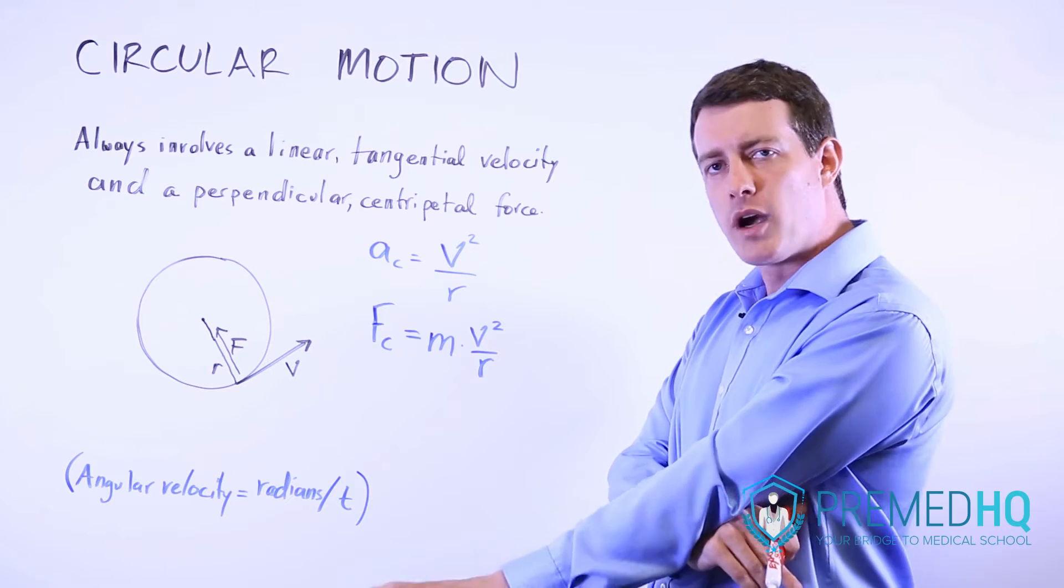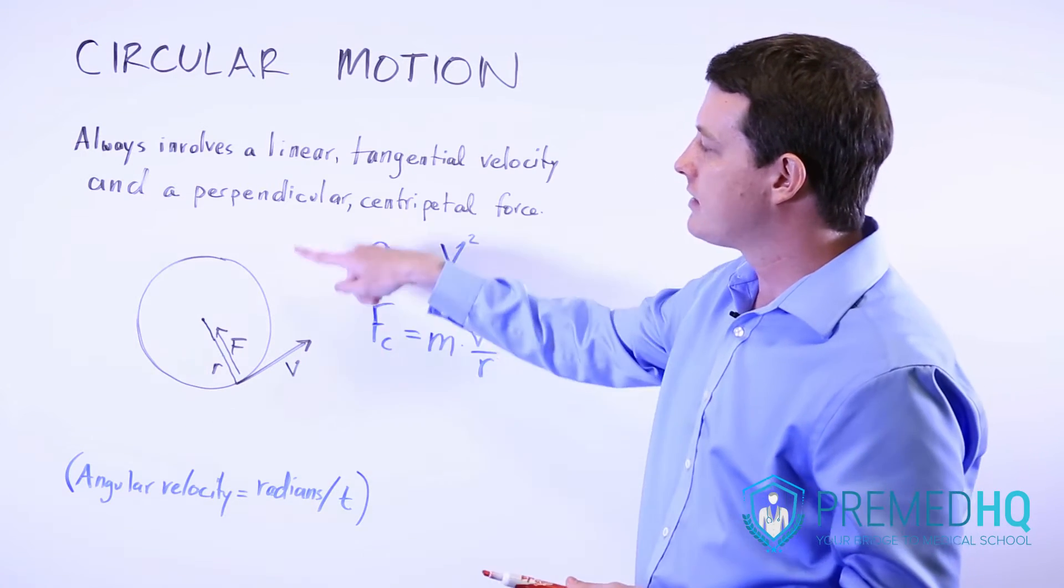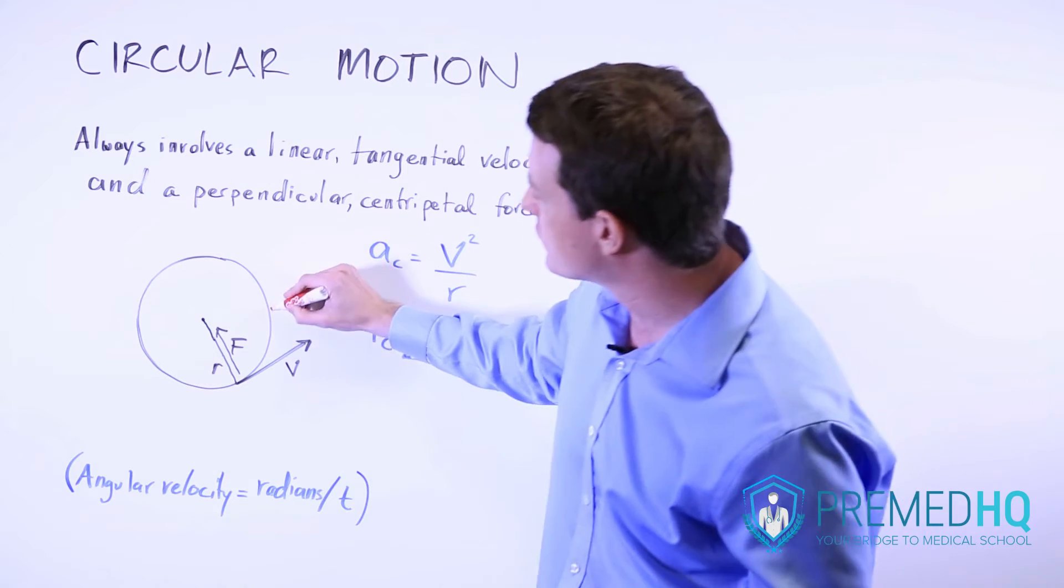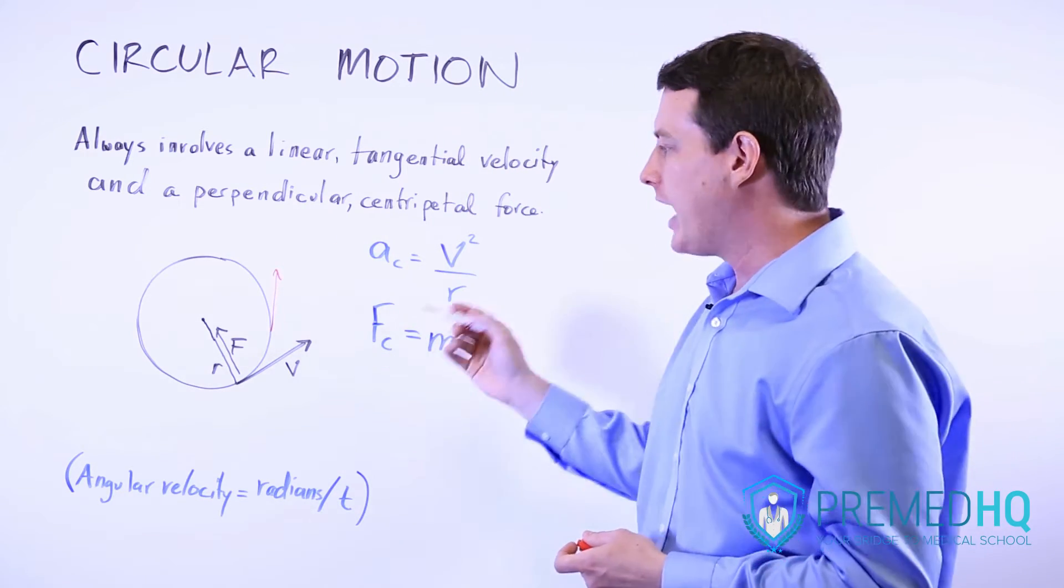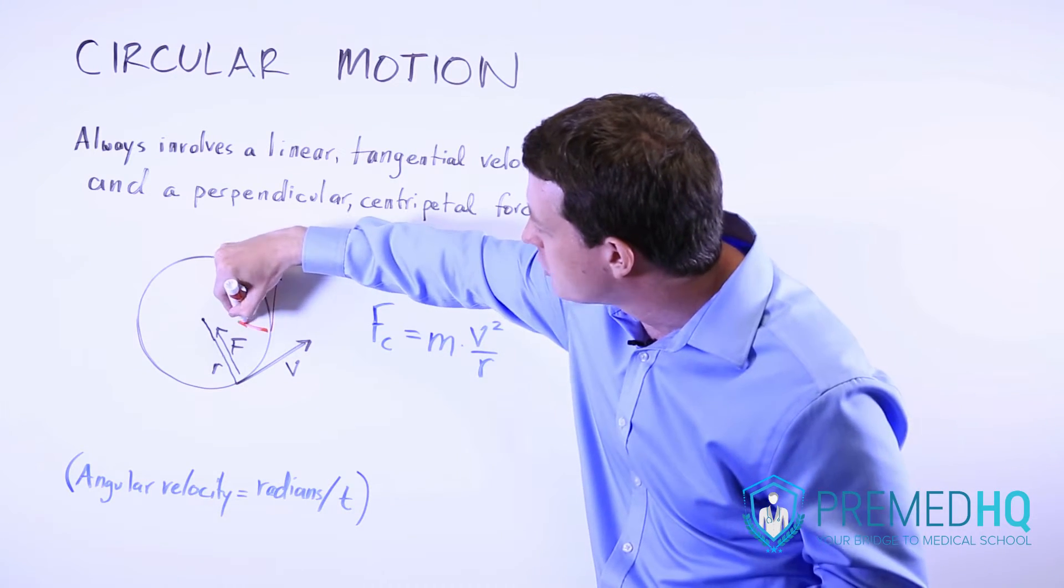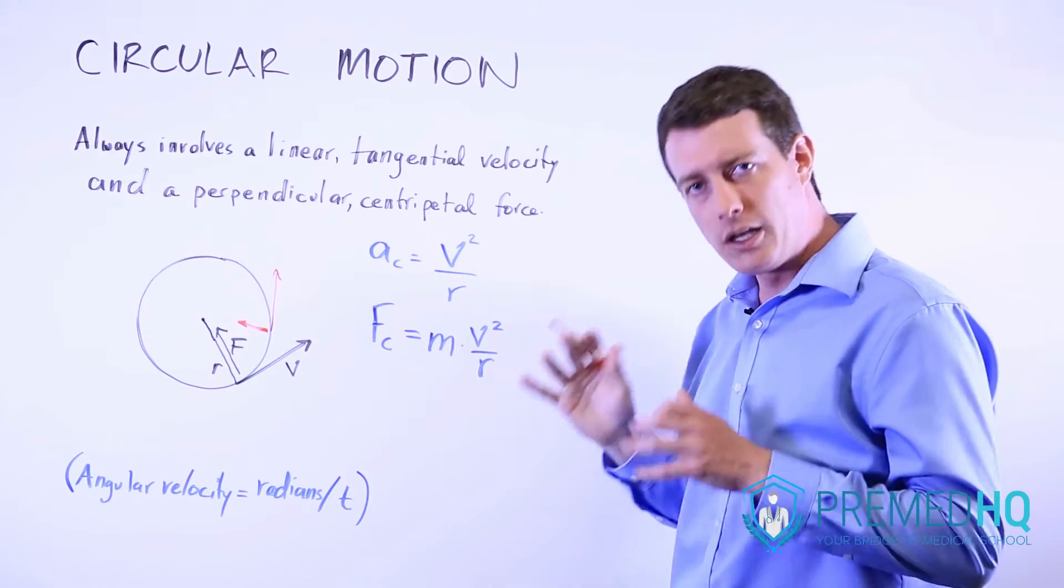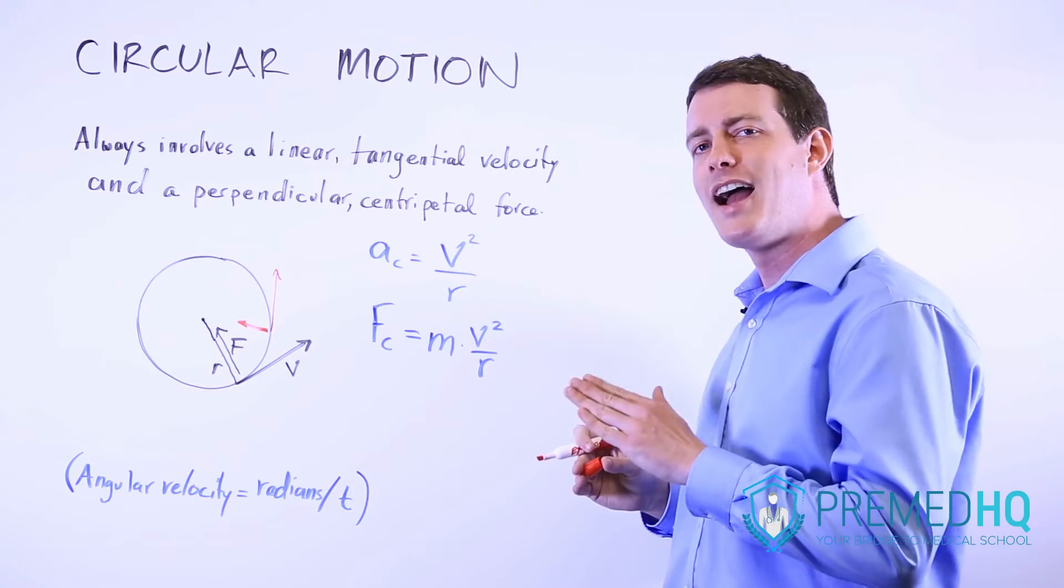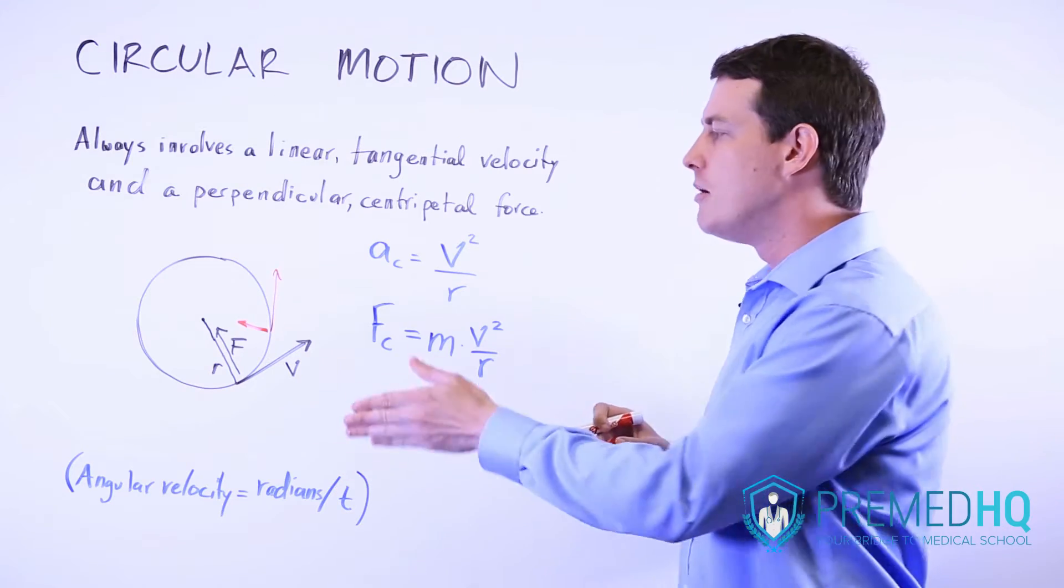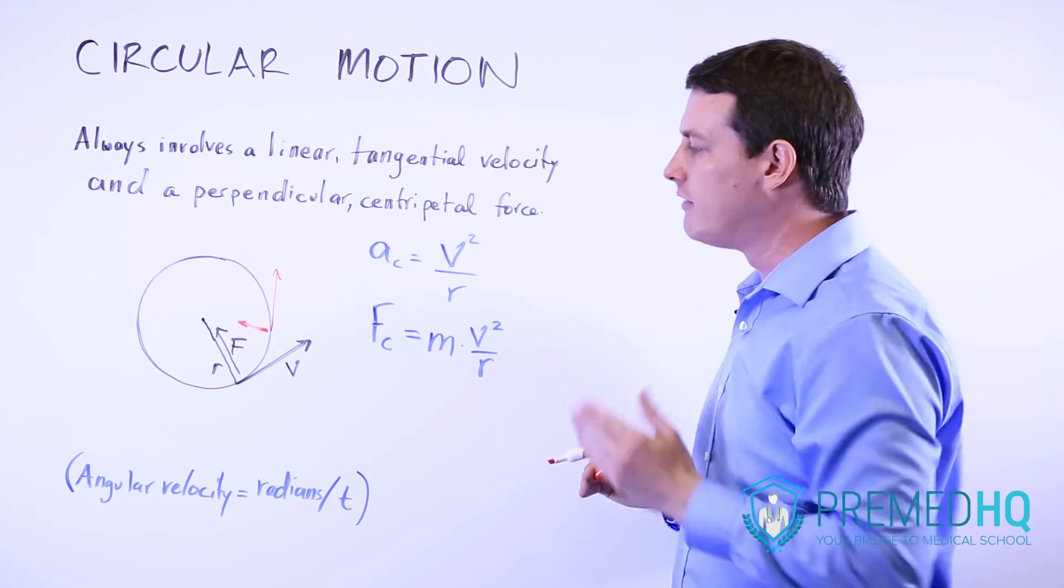Now a few things to be aware of when dealing with these problems. First, as the object continues to move in a circle, the direction of the velocity will change, and so the direction of the force will also have to change so it is moving toward the center of that circle. To have uniform circular motion, you must always have the centripetal force be perpendicular to the tangential velocity of that object.